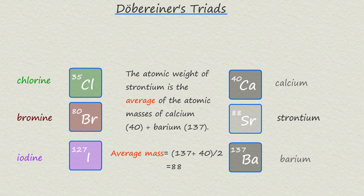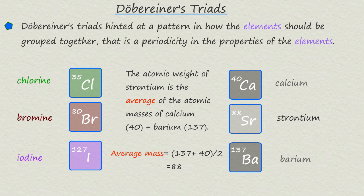So while Döbereiner's triads were treated as a curiosity, they actually hinted at a pattern in the way the elements should be grouped together — that is, they hinted at a periodicity in the properties of the elements — and this later inspired scientists to explore similar patterns.